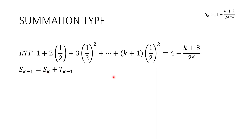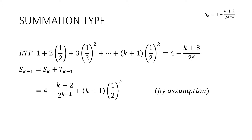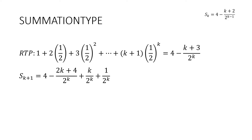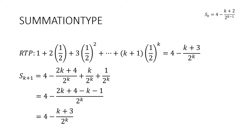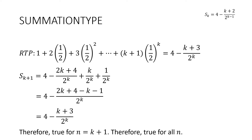Instead of sum of k terms I'm going to write the assumption expression, and instead of the k plus one term I'm going to write the next term — writing 'by assumption' to tell the reader how we know this. We want a common denominator of two to the k, so I multiply top and bottom of the remaining term by two. Tidying up: two k take k is k and four take one is three. Therefore proven, and it is true for n equals k plus one, therefore it is true for all n.